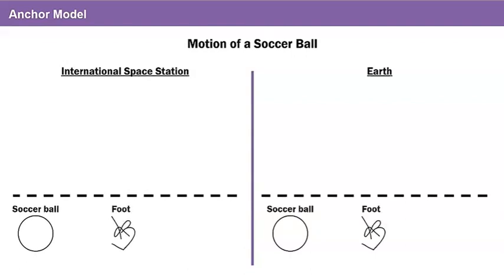What else do we need? We should say where the soccer ball is in each system. On the international space station, the ball is in the air. On earth, the ball is on the grass.